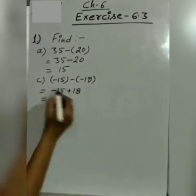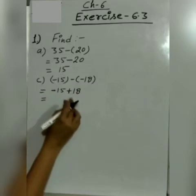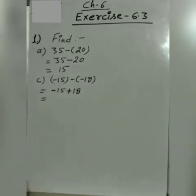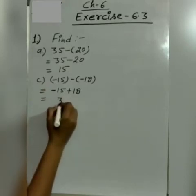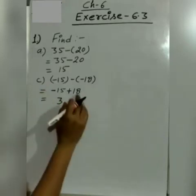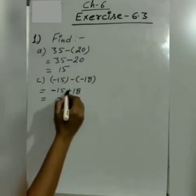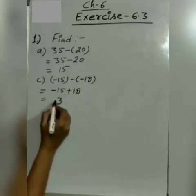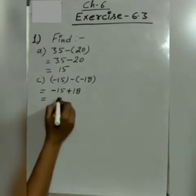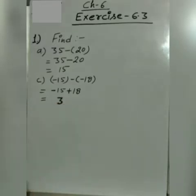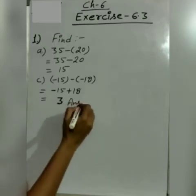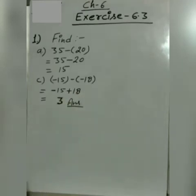One sign is minus and the other sign is plus. So we will subtract them. 18 minus 15 is 3. And the sign will be of the larger number. So 18 is positive. So we will write only 3. Minus 15 plus 18 equal to 3.